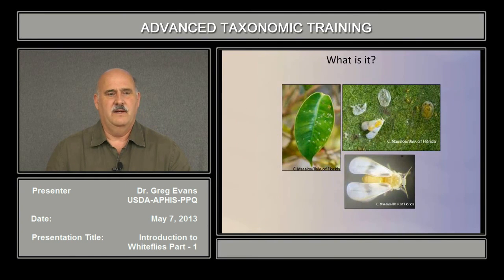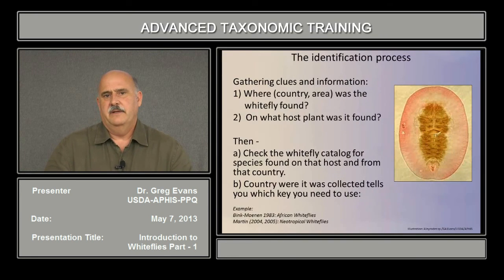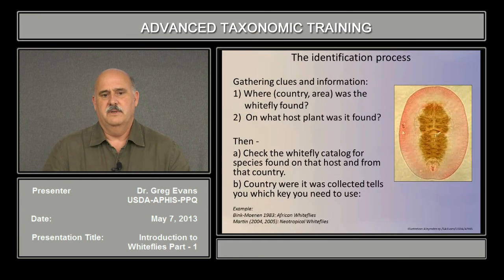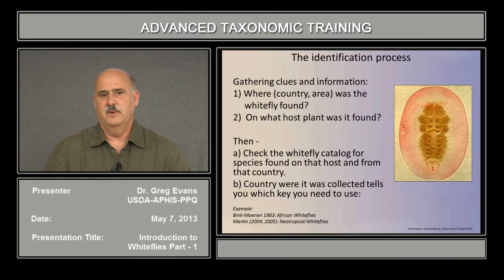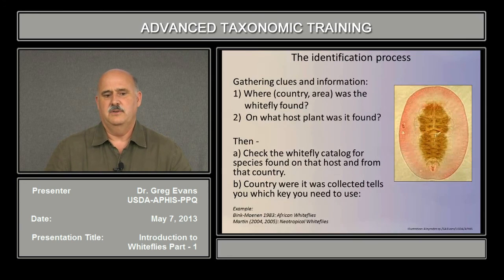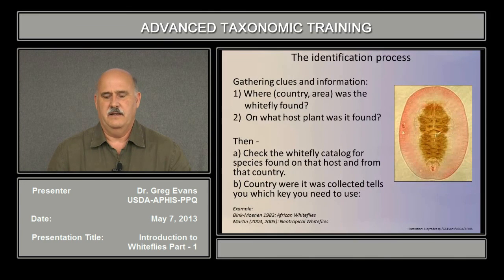This is a white fly that came into Florida not long ago on ficus. The identification process starts with gathering clues and information about the white fly — where was it found and what host was it found on? That information will give you a chance to go to the white fly catalogs and host plant catalogs to find out what other white flies have been found on that host or from that country. Knowing the country or point of origin also tells you which keys and taxonomic information you need to access to try to identify them.